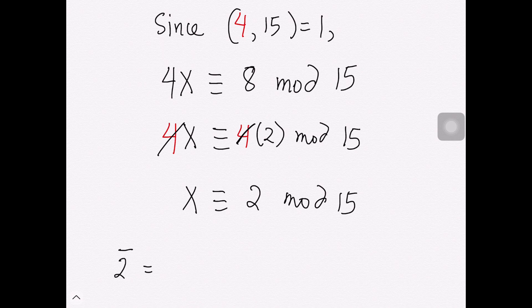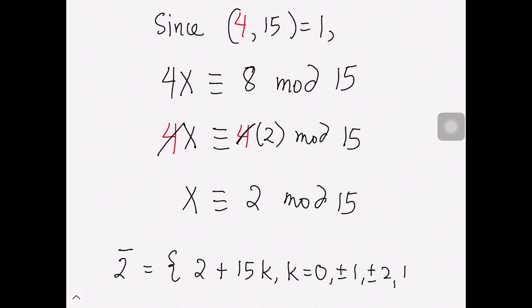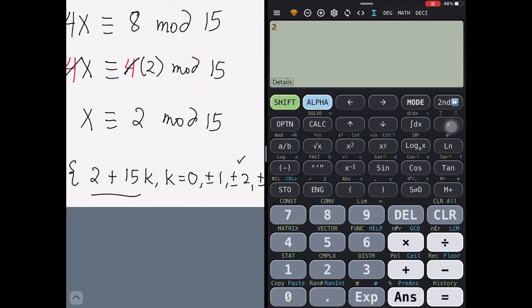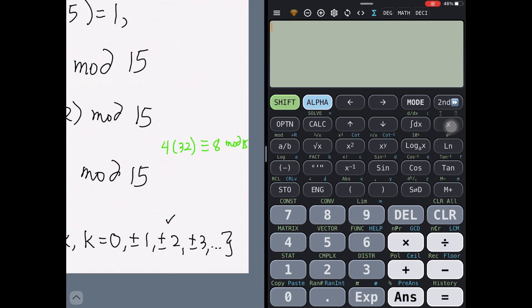This implies that the values of x satisfying this congruence form the equivalence class of 2. Let's verify: the equivalence class of 2 modulo 15 has the form 2 + 15k, where k is an integer. Taking k = 2, we get 2 + 15(2) = 32.